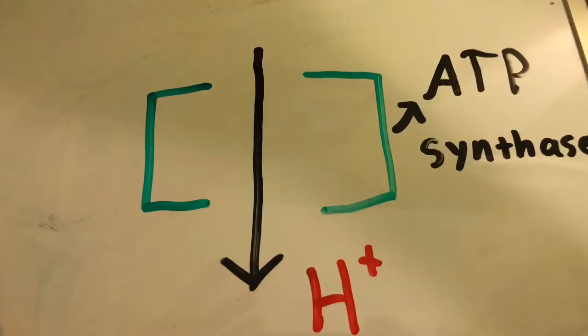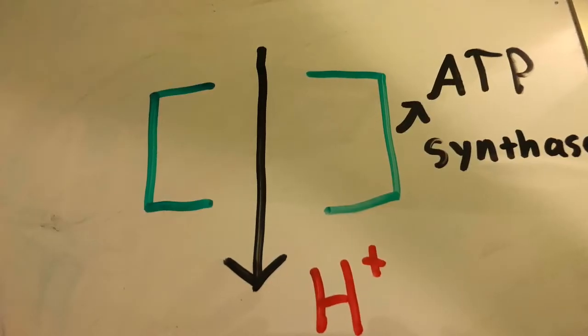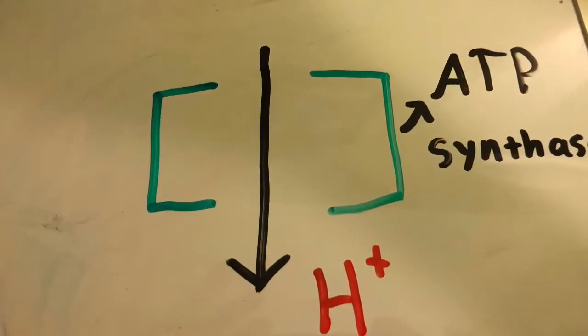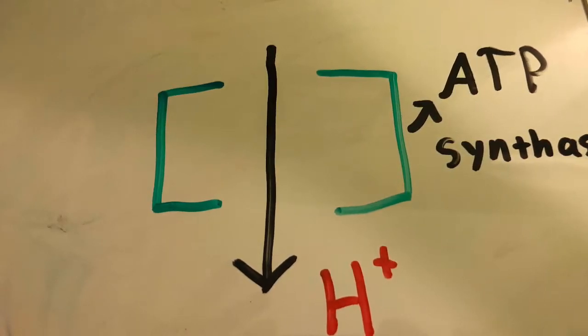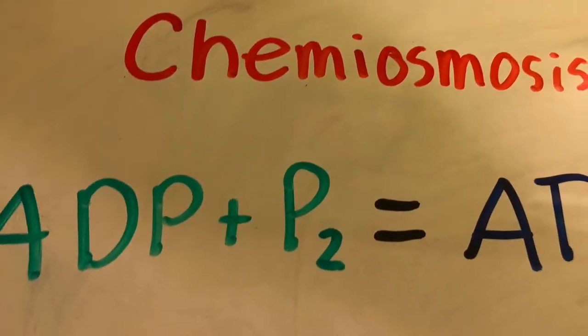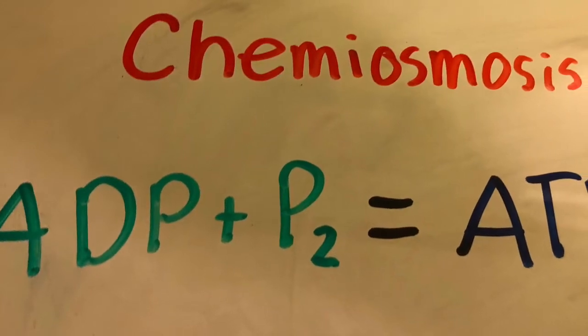As the H plus ions flow down their gradient and into the stroma, they pass through the ATP synthase enzyme, driving ATP production in a process known as chemiosmosis.